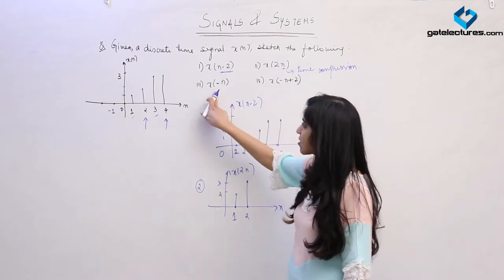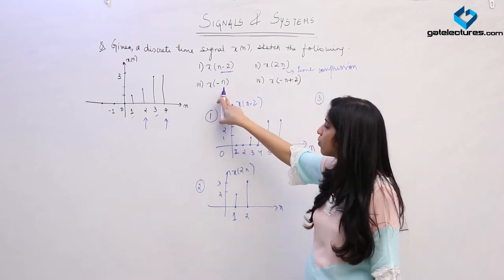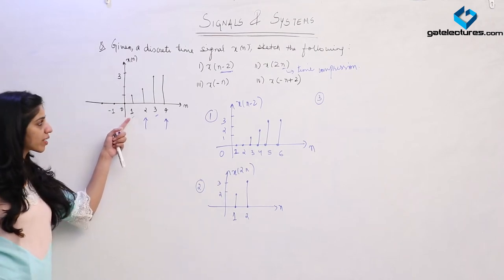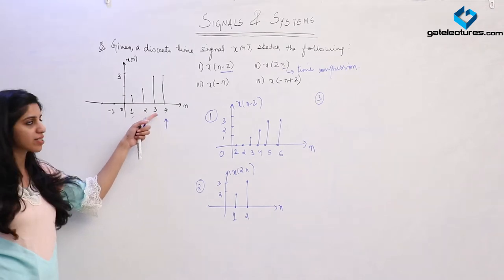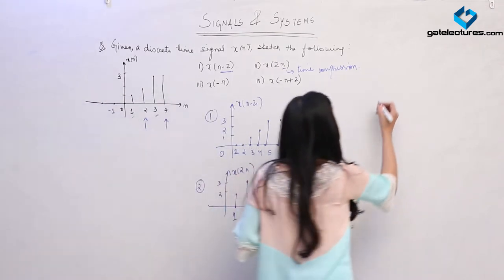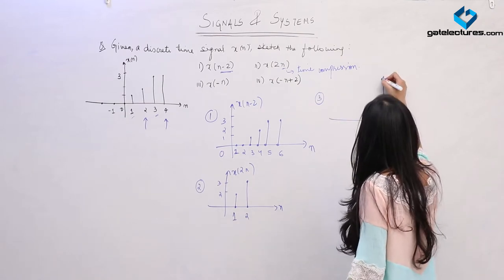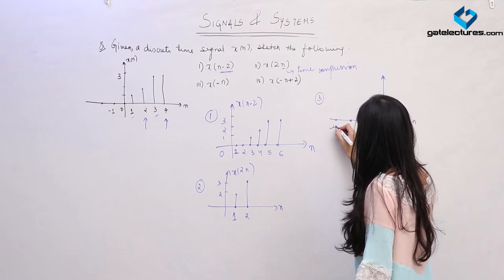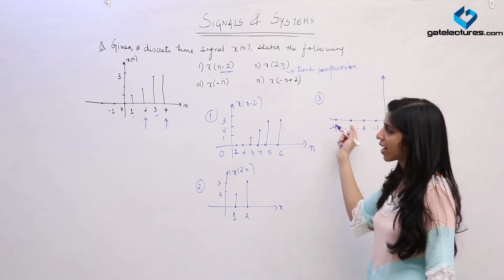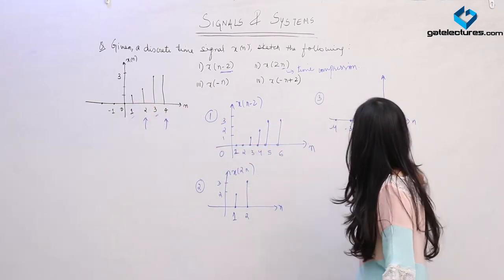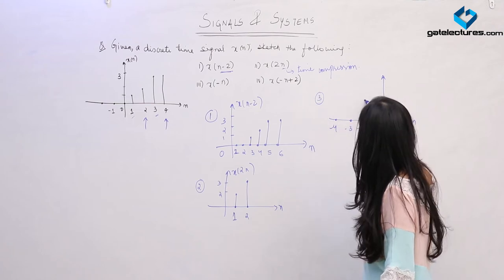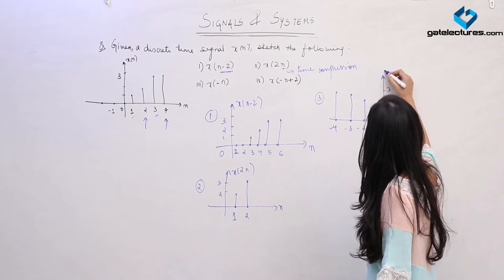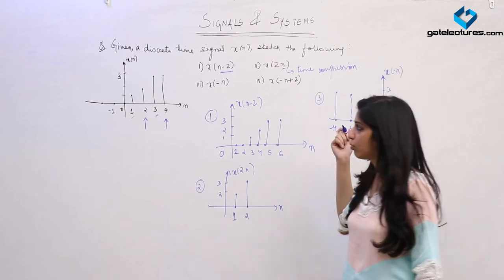Now look at the third part — this is time reversal. What we are doing is reversing: the sample which was occurring at n=1 is now going to occur at n=-1, this one at n=-2, n=-3, n=-4. If I draw this signal, at n=-1 we are going to have this sample with value 1, 2, 3, 3. This is how the time-reversed signal x(-n) is going to look.